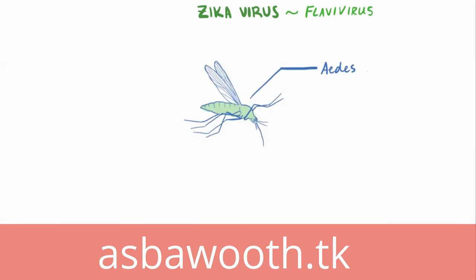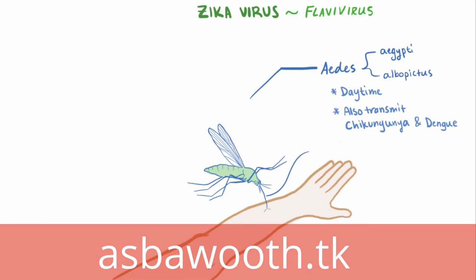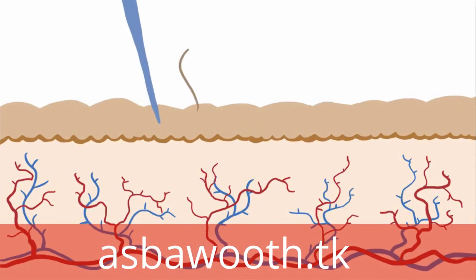The Zika virus is transmitted via mosquitoes in the Aedes genus. These bloodthirsty little guys can bite at night, but are mostly active during the daytime. Aedes mosquitoes are also the same ones that transmit chikungunya fever and dengue fever. When Aedes aegypti or Aedes albopictus, both species of the Aedes mosquito, lands on your skin and sticks in its long nose, or proboscis, it pierces the epidermis, which is the topmost layer, composed almost entirely of keratinocytes.